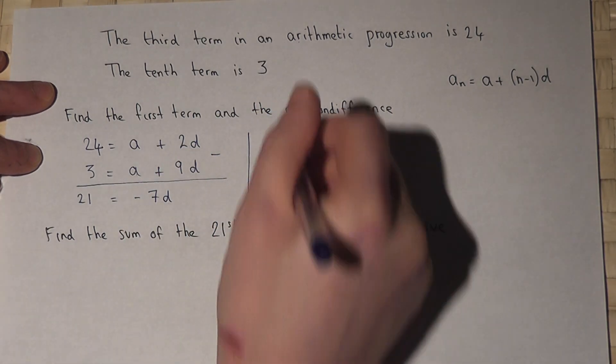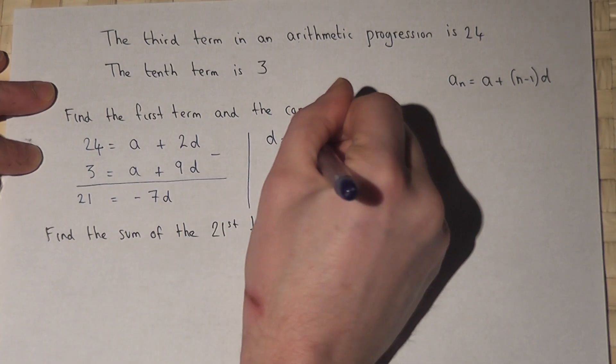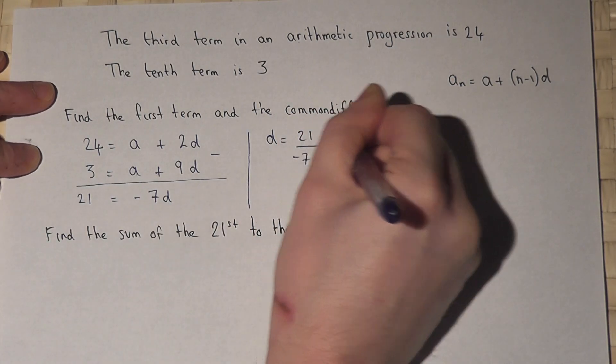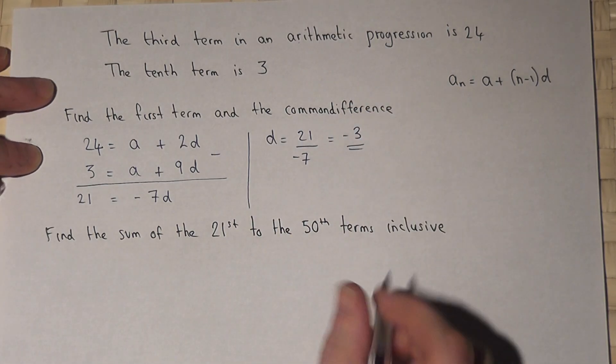So d, the common difference, must equal 21 divided by minus 7, which is minus 3. So the common difference is minus 3.